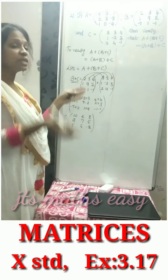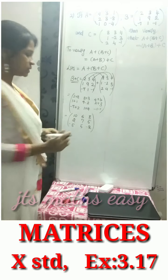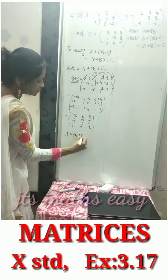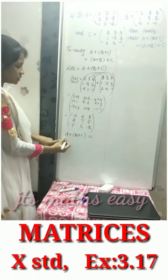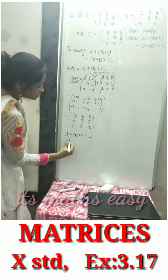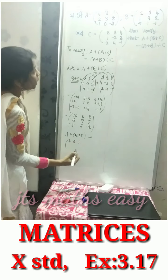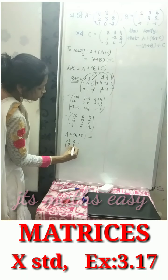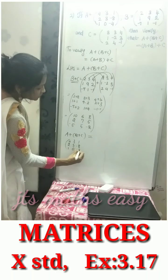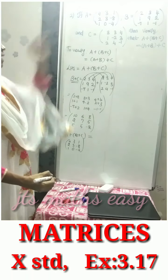Next is A plus B plus C. Now we add matrix A with this result. Matrix A is 4, 3, 1, 2, 3, minus 8, 1, 0, minus 4.